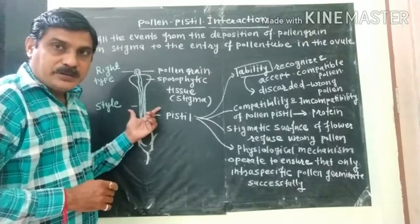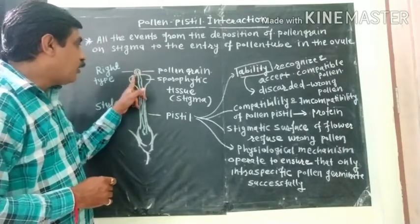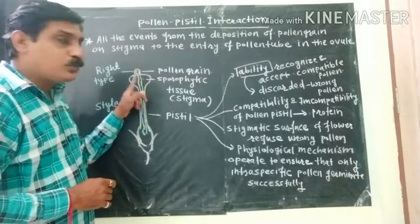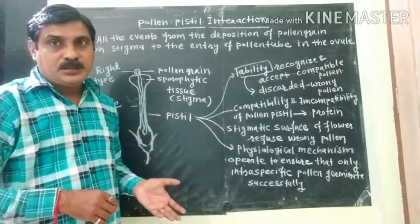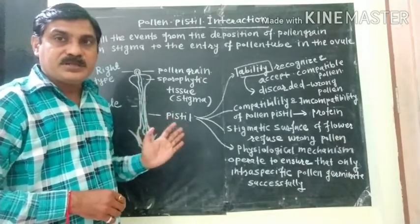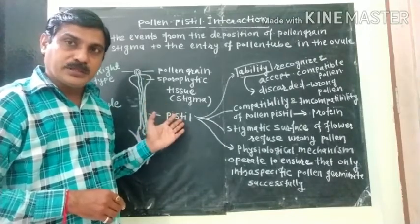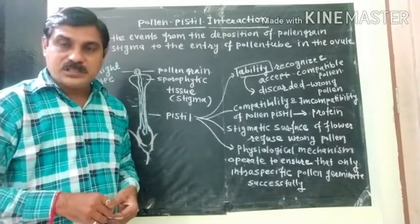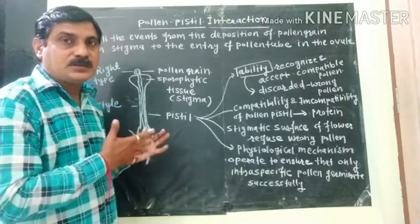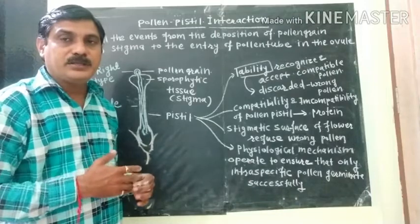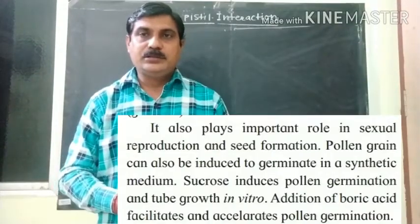On the contrary, if during pollination the wrong type of pollen grain lands on the stigma, the special protein present in the stigma discards this wrong type of pollen grain. Because of this ability of the pistil to discard incompatible pollen, the further mechanism of germination and pollen tube formation will not take place.